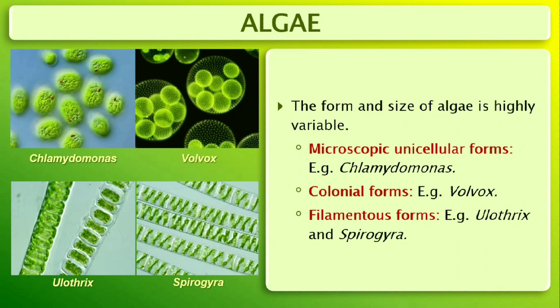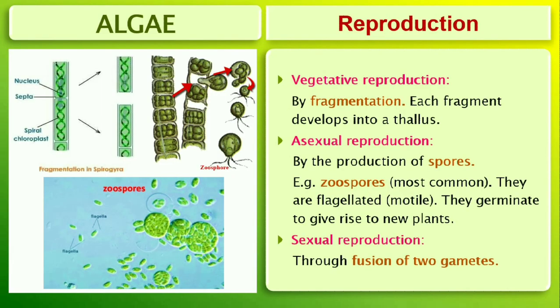The form and size of algae is highly variable. The size ranges from the microscopic unicellular forms like Chlamydomonas, to colonial forms like Volvox and to the filamentous forms like Ulothrix and Spirogyra. A few marine forms such as kelps form massive plant bodies. The algae reproduce by vegetative, asexual and sexual methods.